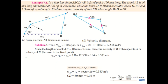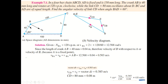Let us read the question. In a four-bar chain mechanism ABCD, AD is fixed and is 150 mm long. The crank AB is 40 mm long and rotates at 120 RPM clockwise, while link CD is 80 mm and oscillates about D. DC and AD are of equal length. We need to find the angular velocity of link CD, where angle BAD is 60 degrees.